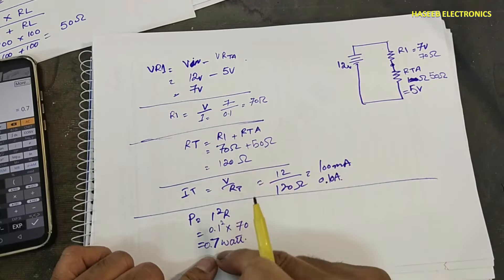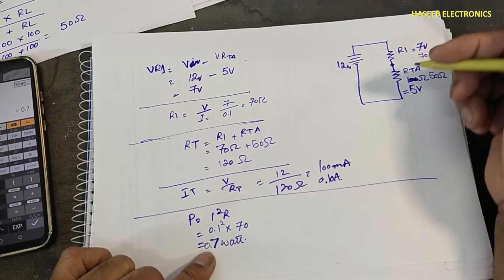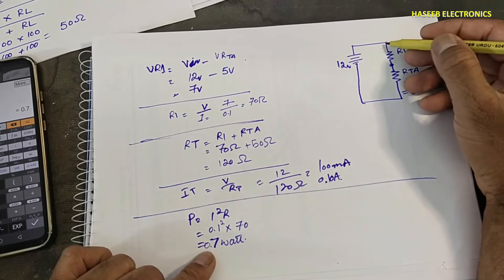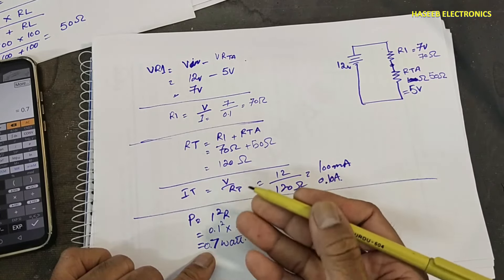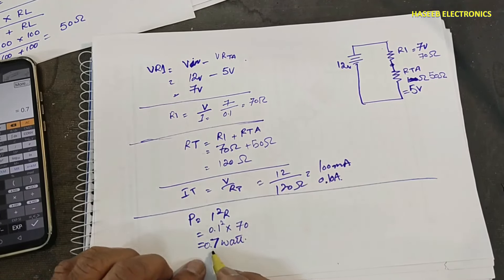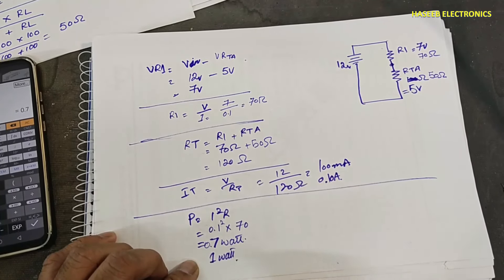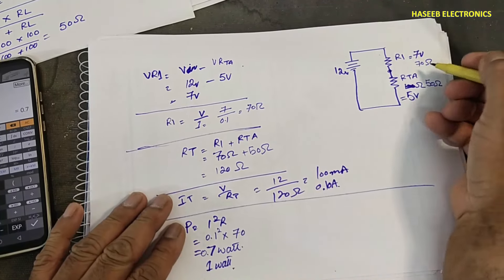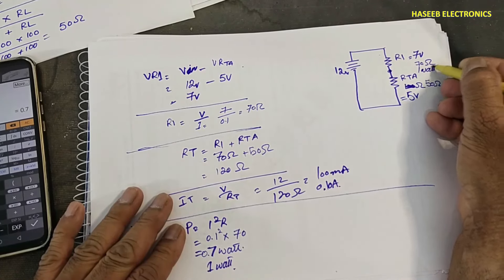We need some extra headroom above 0.7 watts. The next available standard limit is 1 watt. So we need a 70-ohm, 1-watt resistor for R1.